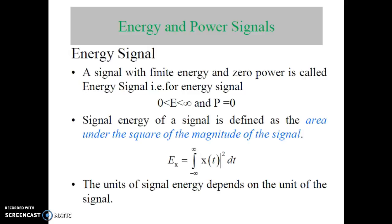Now the next type of signal is the energy and power signal. A signal with finite energy and zero power is called an energy signal. For an energy signal, the energy is available and finite between zero to infinity, and the power is zero. The signal energy is defined as the area under the square of the magnitude of the signal, expressed as E_x equal to the integration from minus infinity to plus infinity of mod of x of t squared, times dt. The unit of signal energy depends on the unit of the signal.